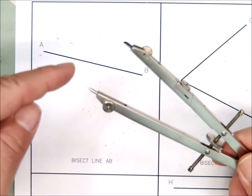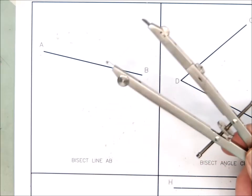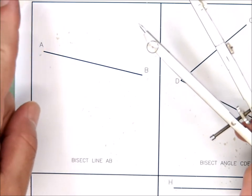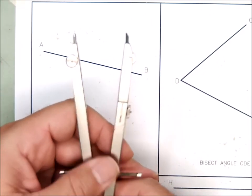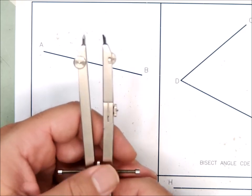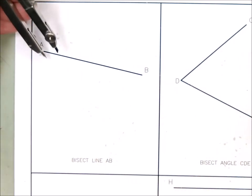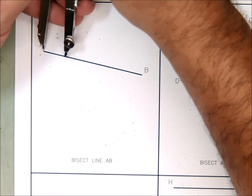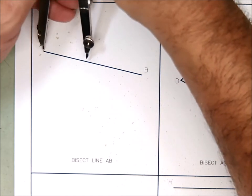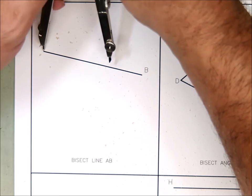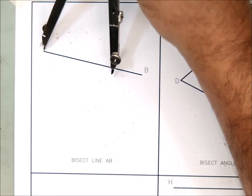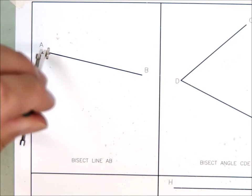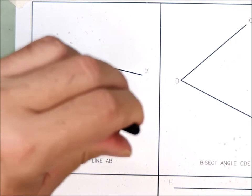We're going to take our compass and we have the point end and the lead end and we're going to stick the point end in at A and then make an arc. Now, it's kind of important how big the compass has been opened up to. You don't want it too small. We want it to go at least halfway, maybe closer to what we estimate three quarters of the way is. See how I'm estimating? That's about three quarters of the way down the line.